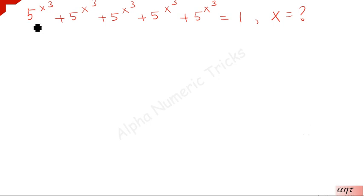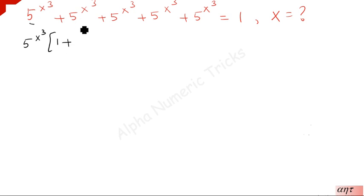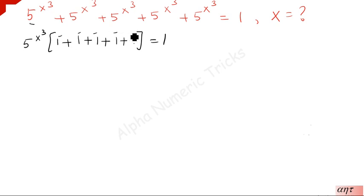Here, phi to the power x cube is common — all the terms have this. So we take that outside. What is remaining is 1 plus 1 plus 1 plus 1 plus 1, which equals 5. So phi to the power x cube times 5 is equal to 1.